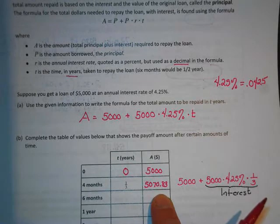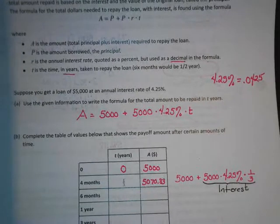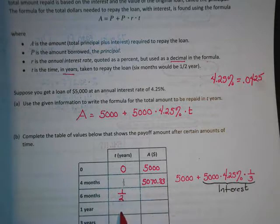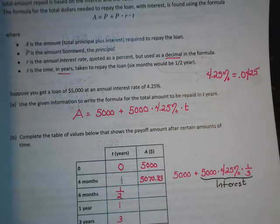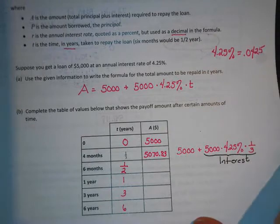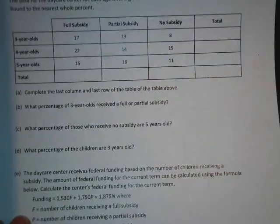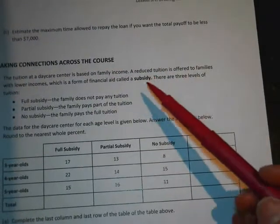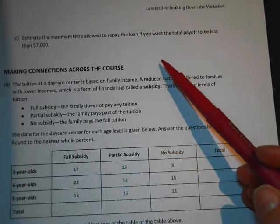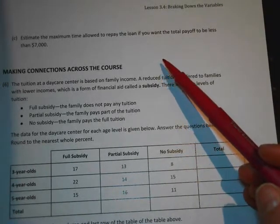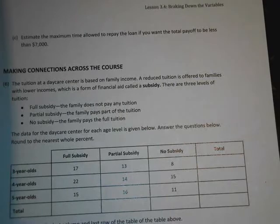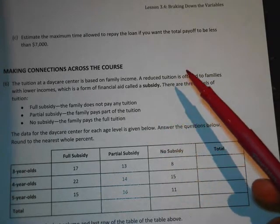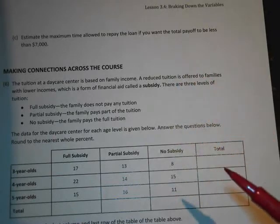Now you can do the rest of the table: six months is half a year, then one year, three years, and six years. As time goes by, you pay more interest. For part C, estimate the time to repay the loan if the total payoff is less than $7,000 — you can plug in time values or set up and solve an equation.